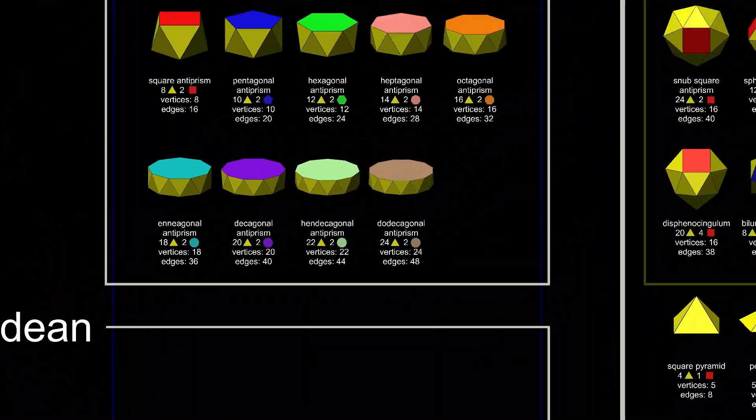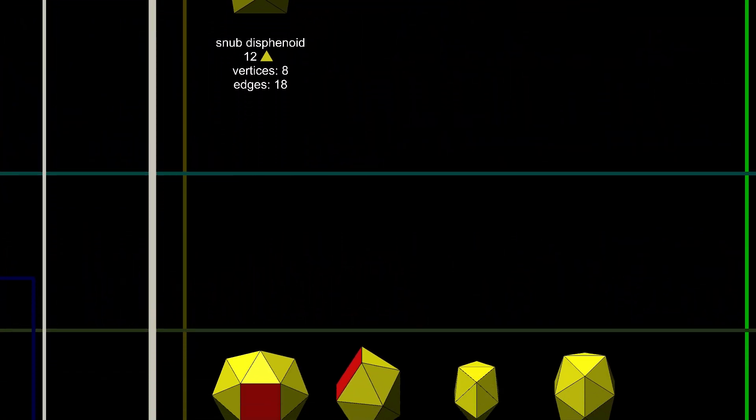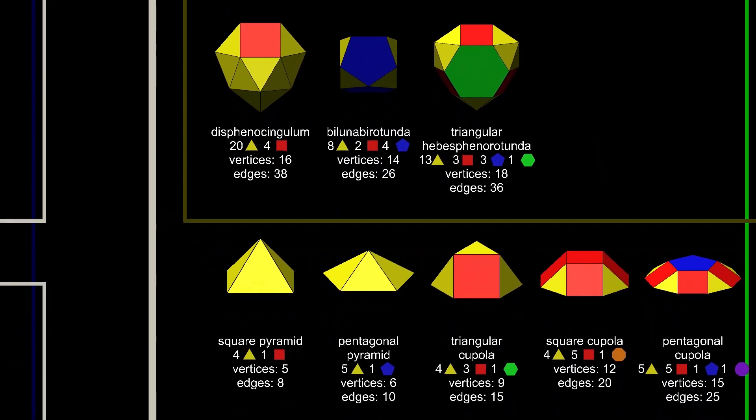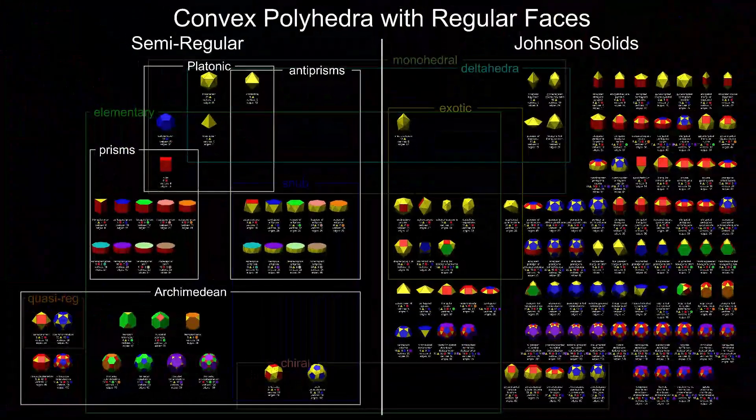Of the Johnson solids, all but one of the exotics are elementary, and nine others, making a total of 28 elementary polyhedra, in addition to the prisms and antiprisms. These are like building blocks. All other polyhedra on this chart can be constructed by gluing these together.